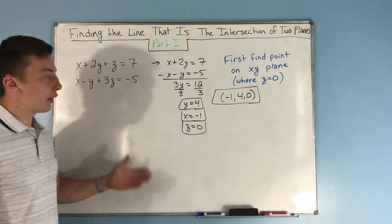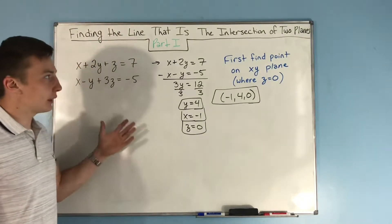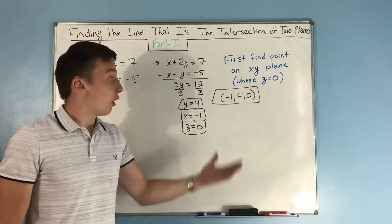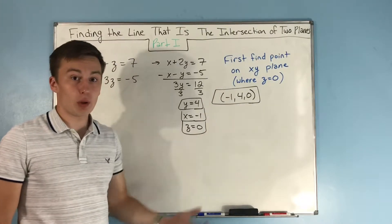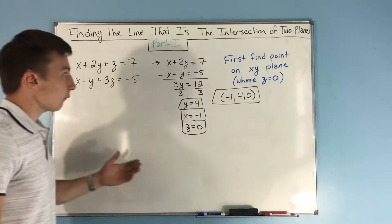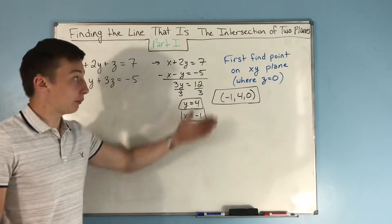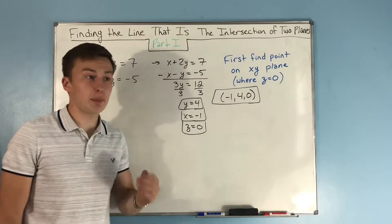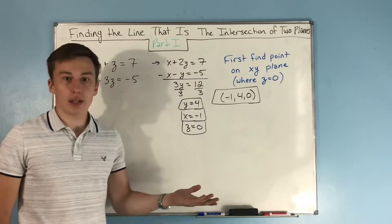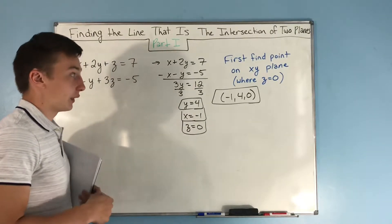One quick note: what happens if these planes don't intersect on the xy plane — if there's no intersection point on the xy plane? Well, that's fine; the system of equations that we set up won't work, and we have to maybe choose something different. Try the xz plane or maybe the yz plane. I've never had that scenario happen myself, but I think it could — you might get something like that on a quiz or test.